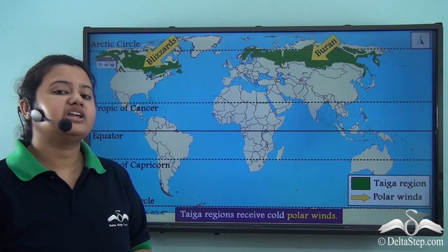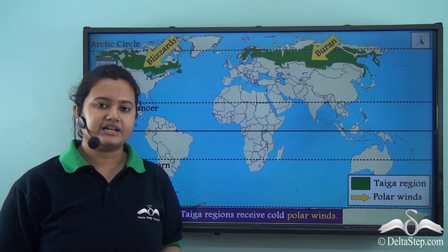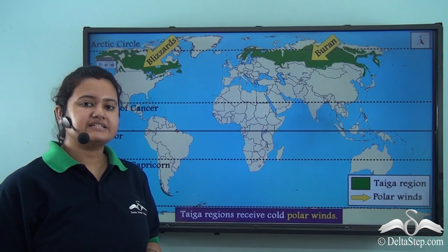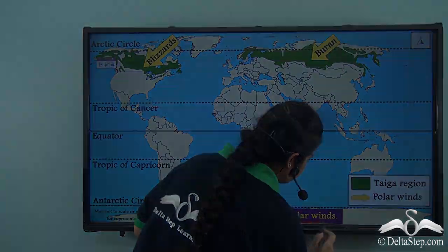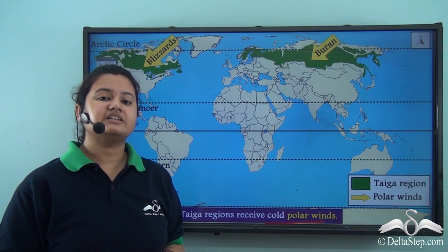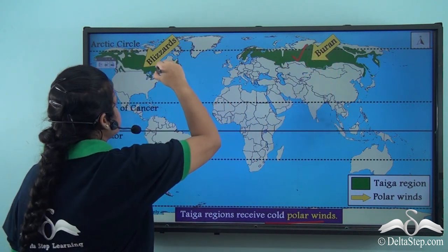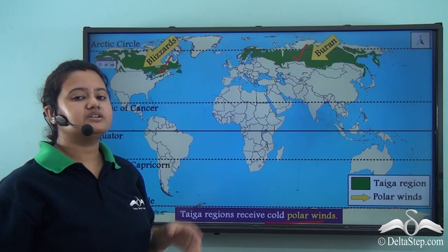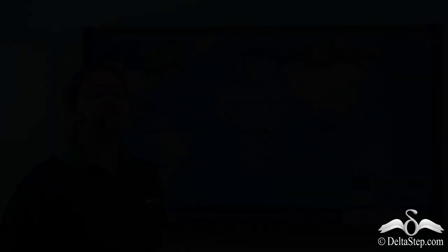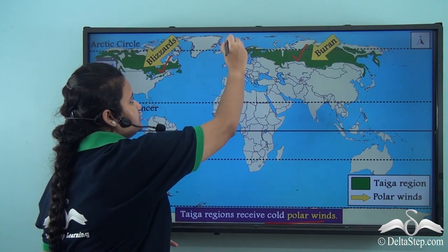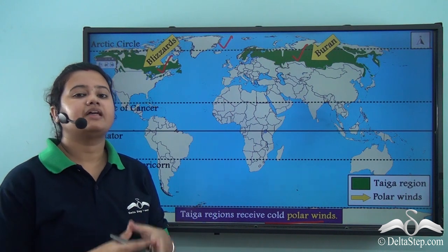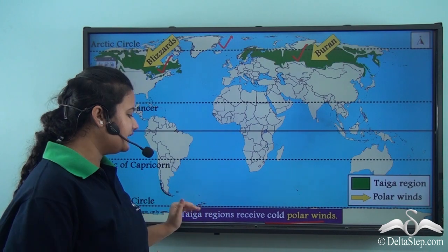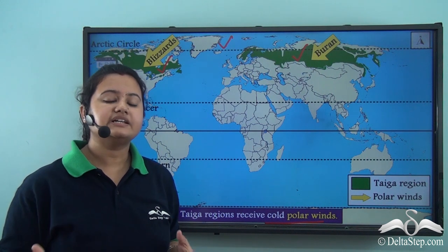Yet another reason for the low mean temperature of the Taiga region is that it experiences cold polar winds. Examples of cold polar winds prevalent in the Taiga region include Buran, which is prevalent in the Eurasian part, and Blizzards, which blow over the North American part. These winds originate in the polar regions and move towards lower latitudes. Since they originate in polar regions, they are very cold, further decreasing the temperature of the Taiga region.